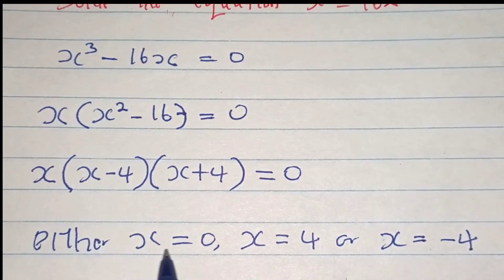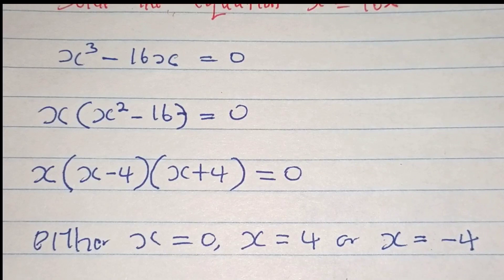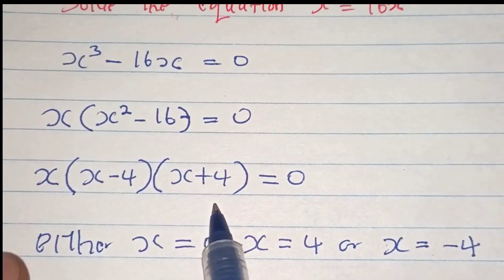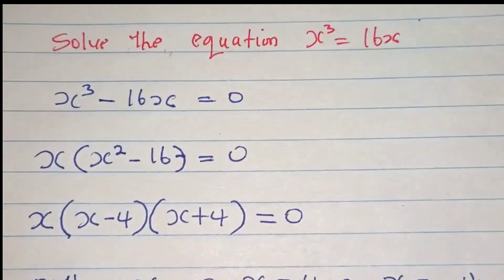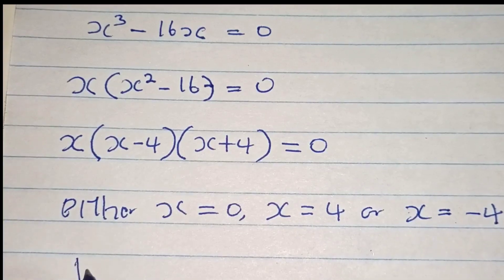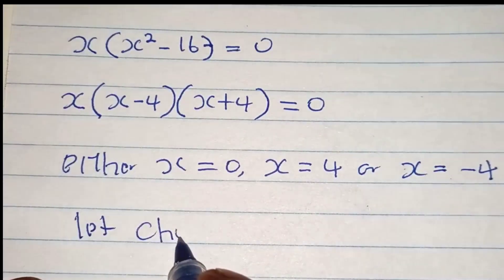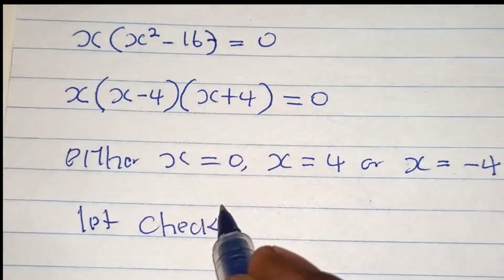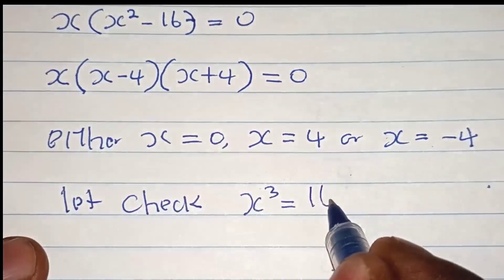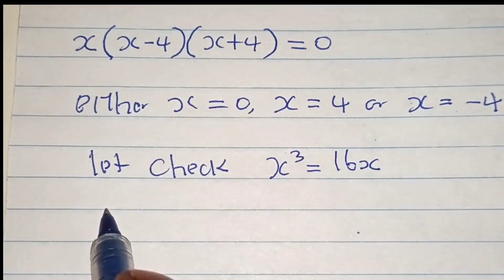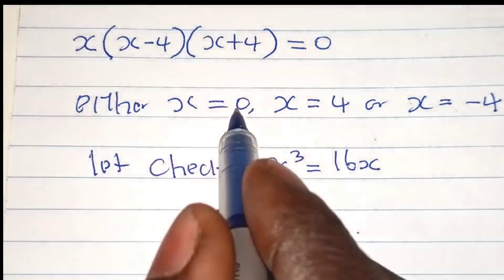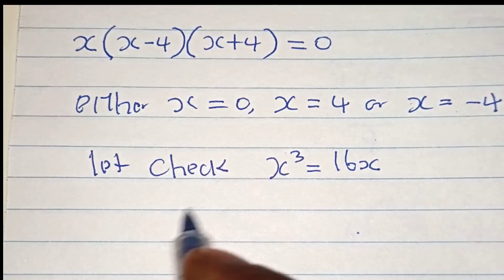We can check the solution by substituting the value of x back into the original equation x cubed equals 16x. Let's check — we substitute the value of x equals zero.